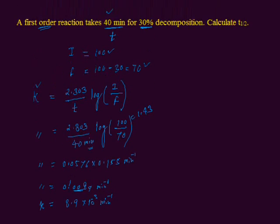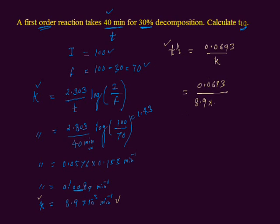The question says to calculate T half. T half is the symbol of the half-life period. The relation between the half period and rate constant K is given by: T half is equal to 0.693 divided by K, where K is the rate constant. Its value has been determined. We can plug in this value: T half is equal to 0.693 divided by K, where K is 8.9 × 10 to the power minus 3 per minute.